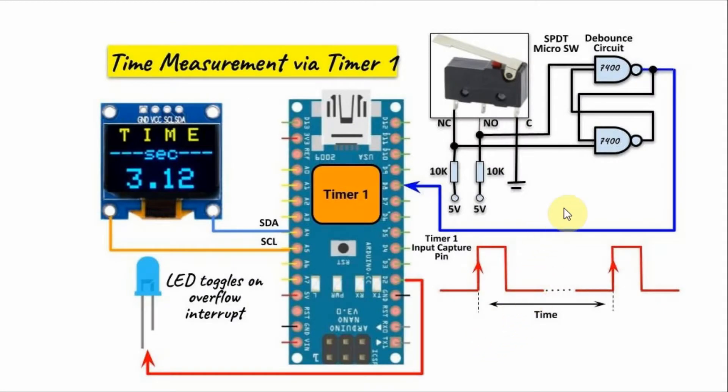A block diagram of the implemented system is shown here. We have an SPDT micro switch coupled with a debounce circuit that generates at the output a single pulse every time we click on the switch. The pulse is applied to digital pin D8 of the Arduino. We also have an LED connected to digital pin D2 and an OLED screen interfaced to the Arduino using I2C connection.